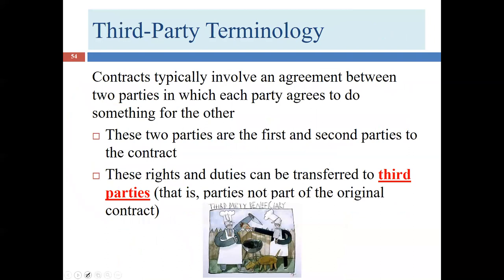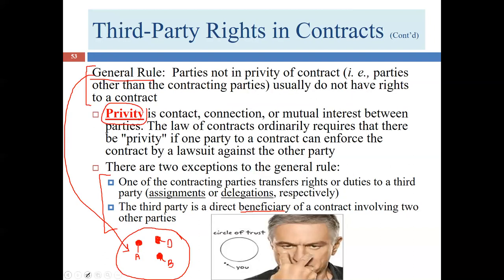The third party is the party who is not part of the original contract. That third party could be the assignee, the delegatee, or the beneficiary.